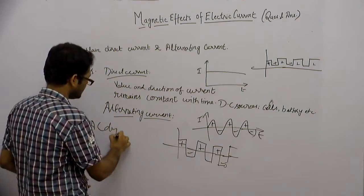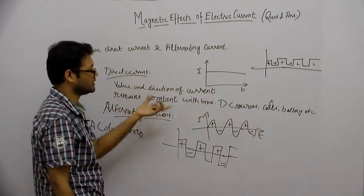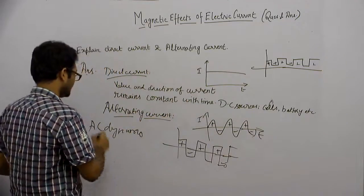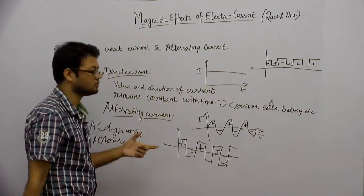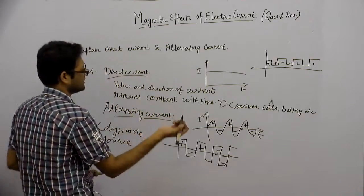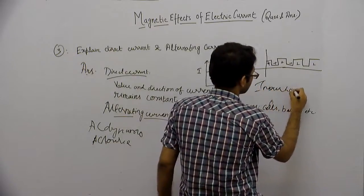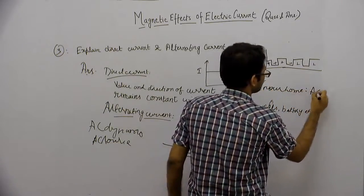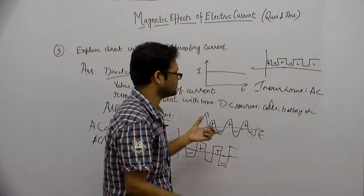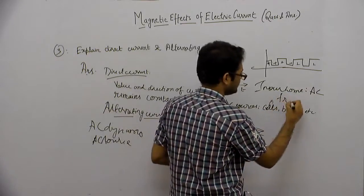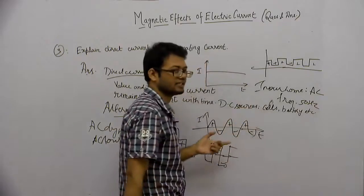Alternating current के sources — AC dynamo हो गया। DC dynamo भी होता है लेकिन DC dynamo का direct current source होता है, AC dynamo का AC source होता है। हमारे जो घरों में आता है वो AC current होता है, और उसकी frequency 50 Hz होती है — इस 50 Hz frequency पे current oscillate करता है।